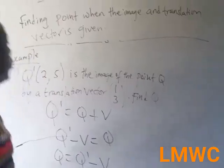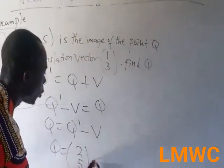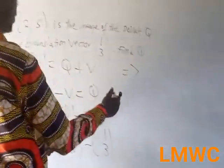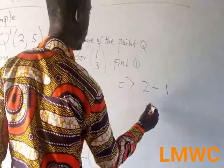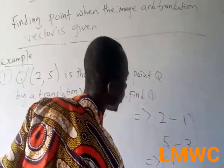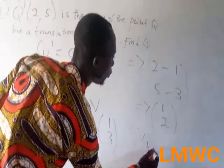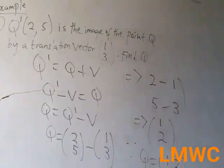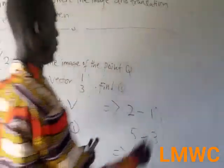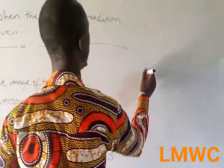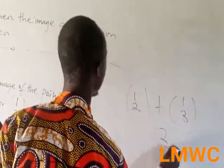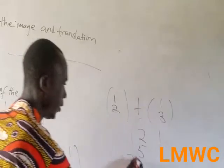We know K prime, the image, is (2, 5) minus translation vector (1, 3). You subtract the numbers at the top and the numbers at the bottom. So we have 2 minus 1 and 5 minus 3. 2 minus 1 is 1, and 5 minus 3 is 2. Therefore K is (1, 2). To verify: 1 plus 1 is 2, and 2 plus 3 is 5 — we get the image (2, 5). This means our answer is correct.